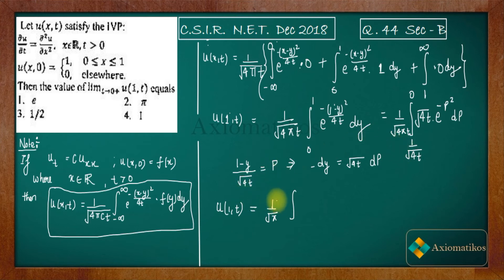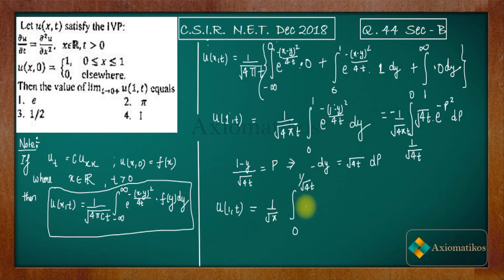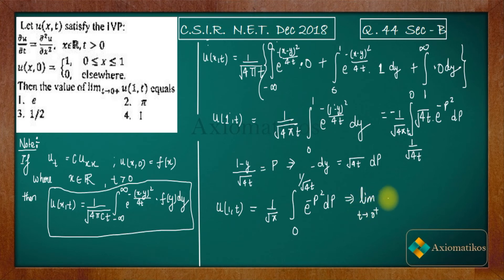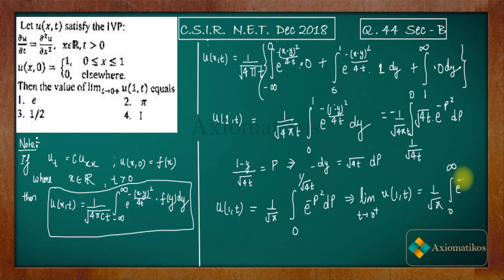Now we find the limit as t goes to 0 from the positive direction of u(1,t). As t → 0⁺, the upper limit 1/√(4t) goes to infinity. So we get the limit equals 1/√π times the integral from 0 to infinity of e^(−p²) dp.